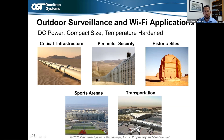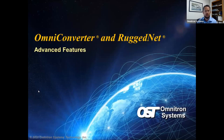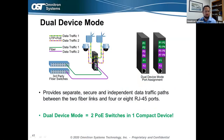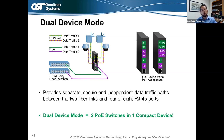RuggedNet is also used in transportation applications — subways, trains, airports — running out on the tarmac with fiber for surveillance. Now let's look at advanced features available with Omni Converter and RuggedNet switches. The first is dual device mode, which saves space by turning one physical PoE switch into two logical switches. This is set through management or by flipping a DIP switch on the side of the product.